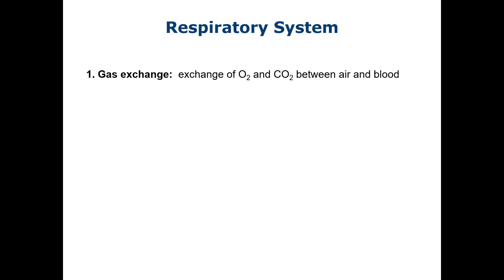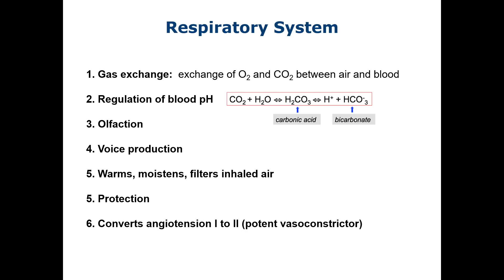Finally, we have the process of internal respiration: the movement of oxygen from blood to tissues and carbon dioxide from tissues to blood. The respiratory system has other critical functions, including regulation of blood pH, olfaction, voice production, and protection. It also converts angiotensin 1 to 2, which is an important vasoconstrictor.